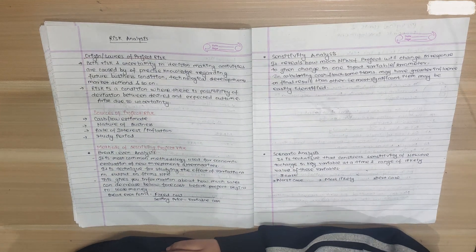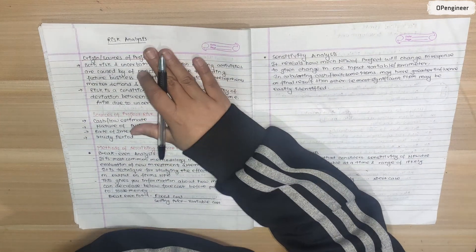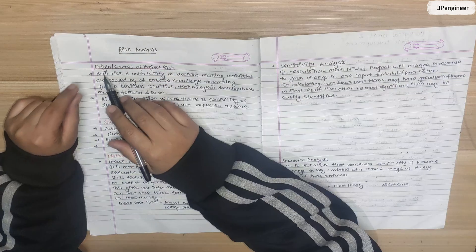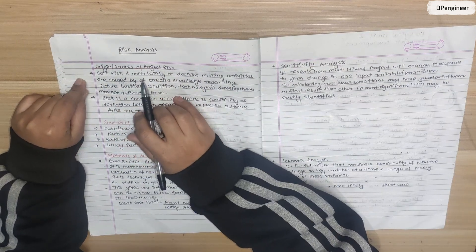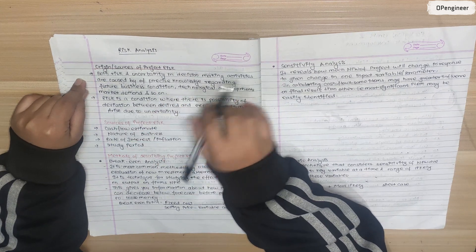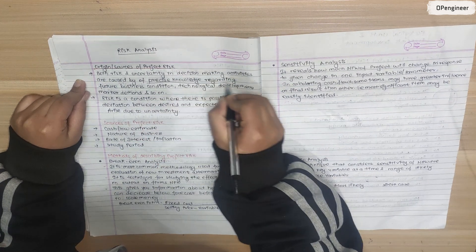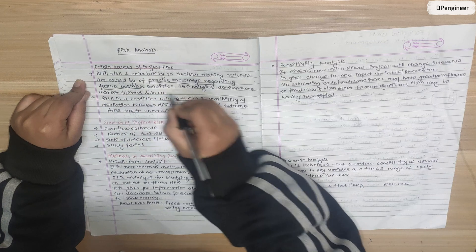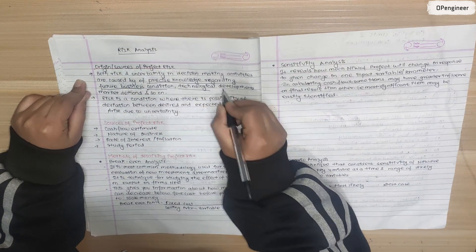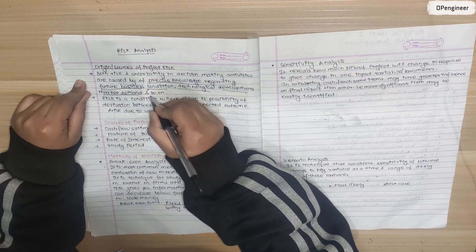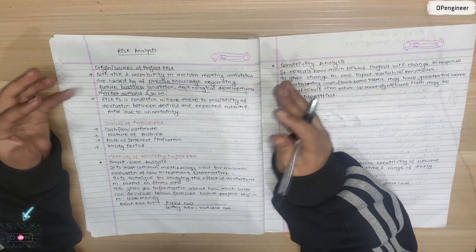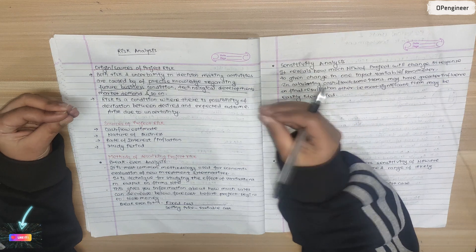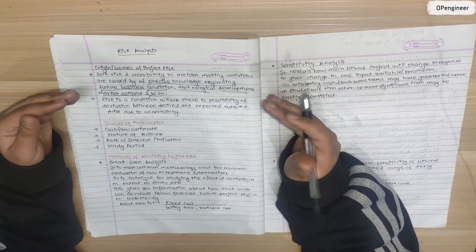I am discussing engineering economics, risk analysis chapter. First, origin and sources of project risk. Both risk and uncertainty in decision-making activities are caused by lack of precise knowledge regarding future business conditions, technological development, market demand and so on. Risks or uncertainties in decision-making activities are caused by lack of precise knowledge.